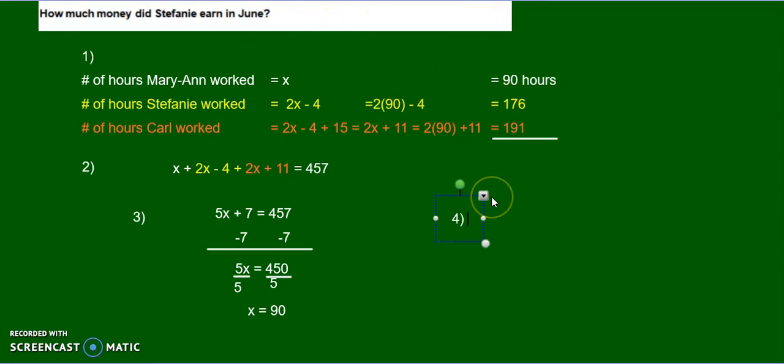How much did Stephanie earn in June? Well, she worked 174 hours. So Stephanie earned 176 hours that she worked, 176 times $28.50 per hour.